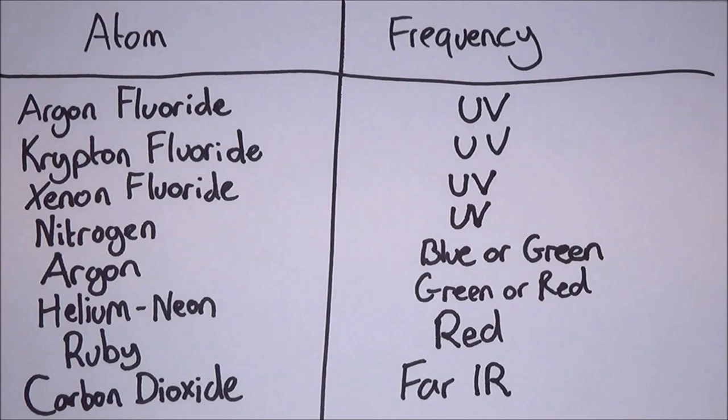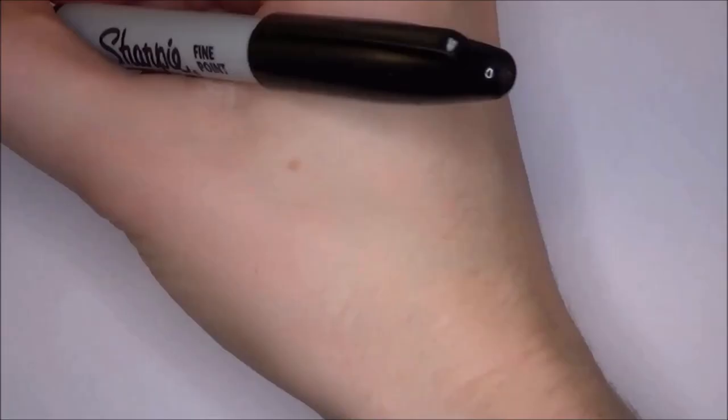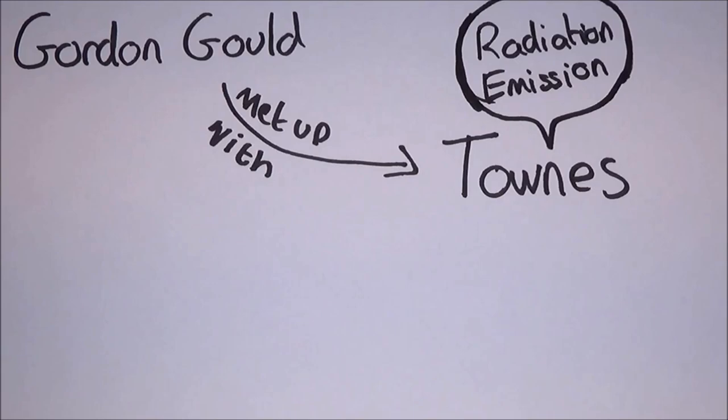Of course, there's a little bit of history behind the laser too. Gordon Gould was a graduate student working on his doctoral thesis at Columbia University. Gordon Gould met and spoke with Townes generally about radiation emission, to which Gould then would note down his idea for a laser, which included a part known as a resonator, which is now an essential part of lasers.